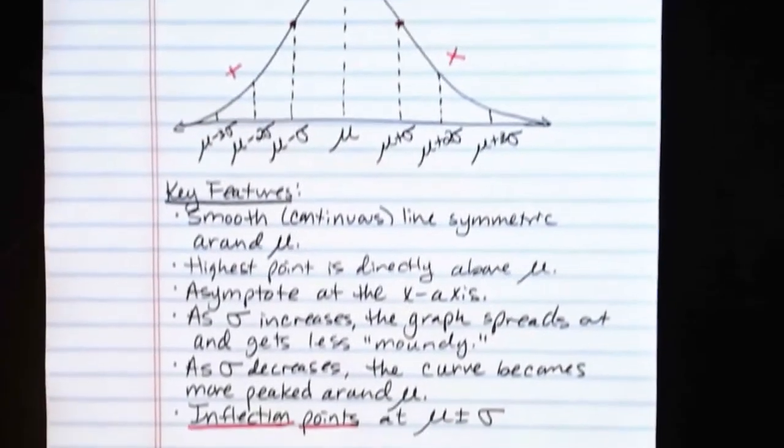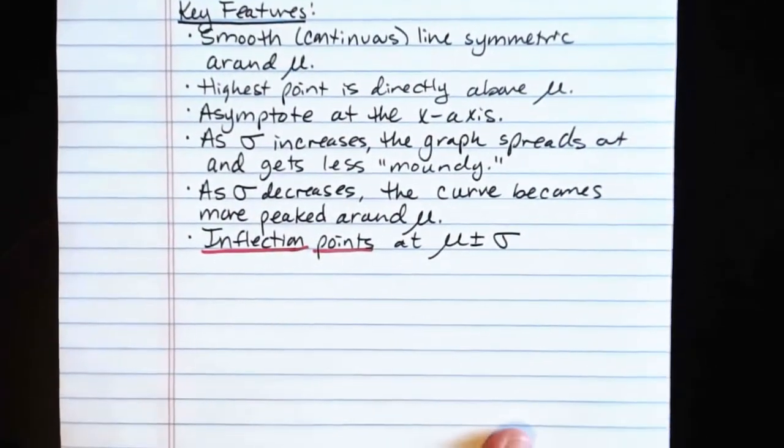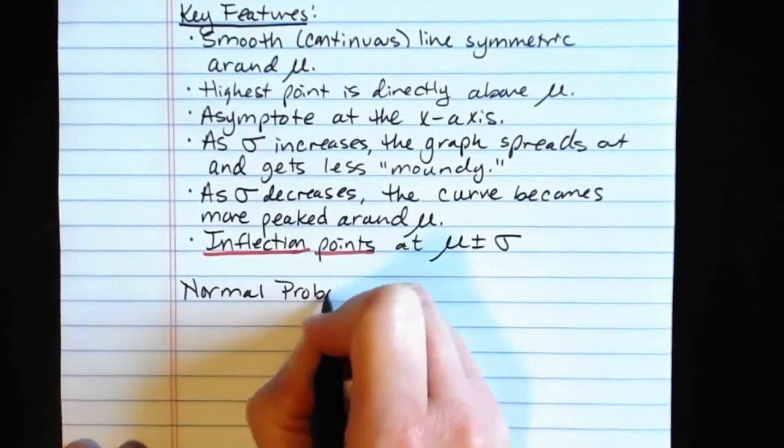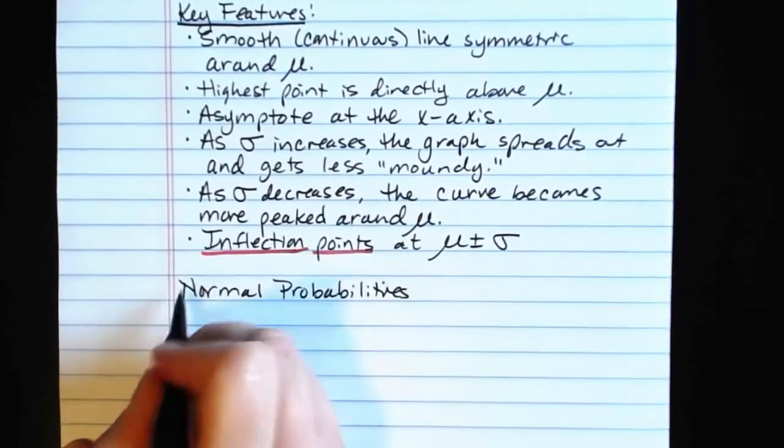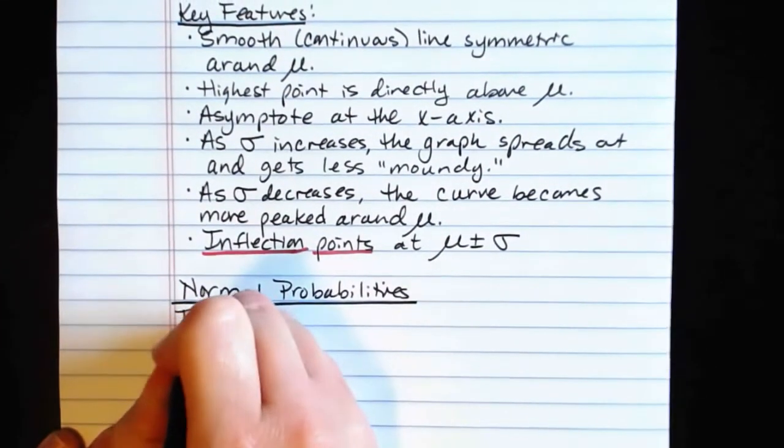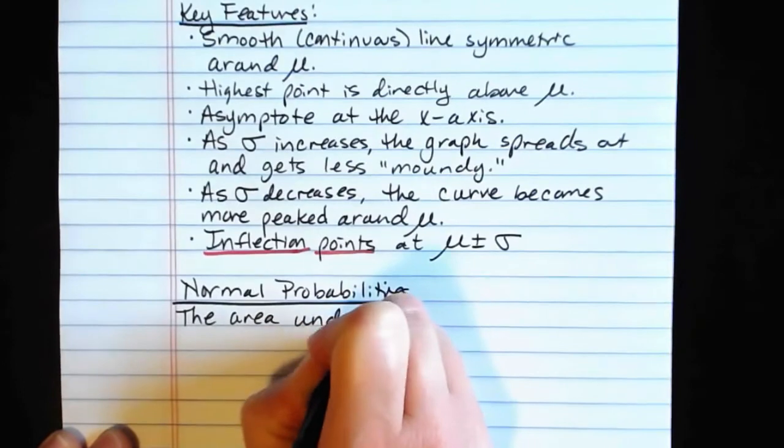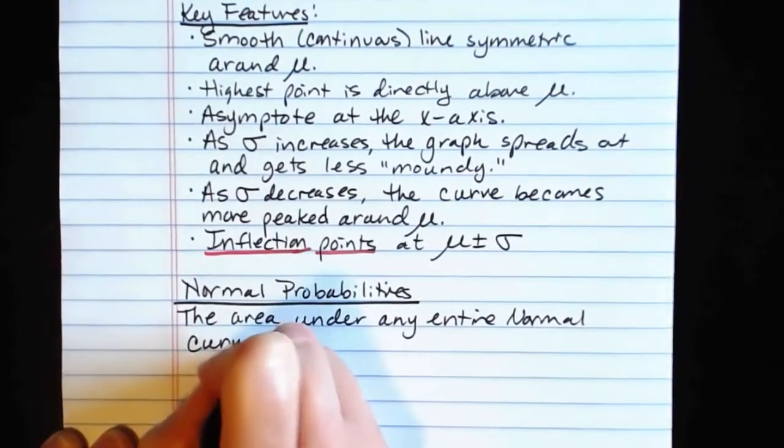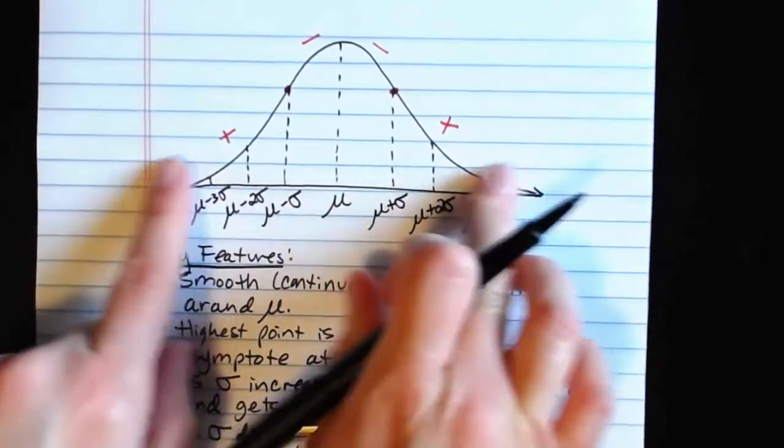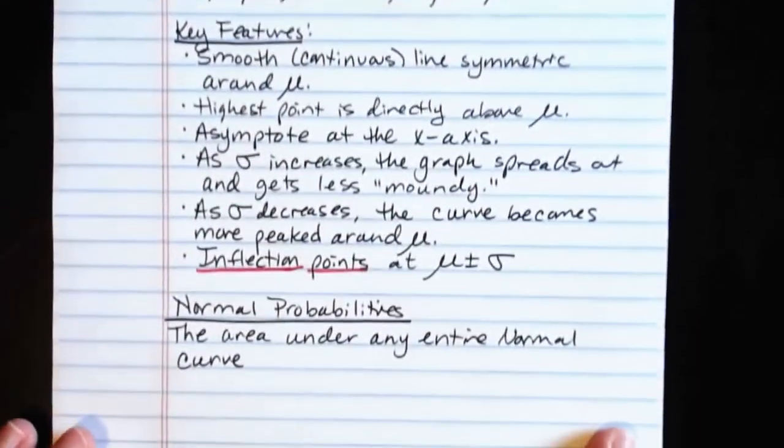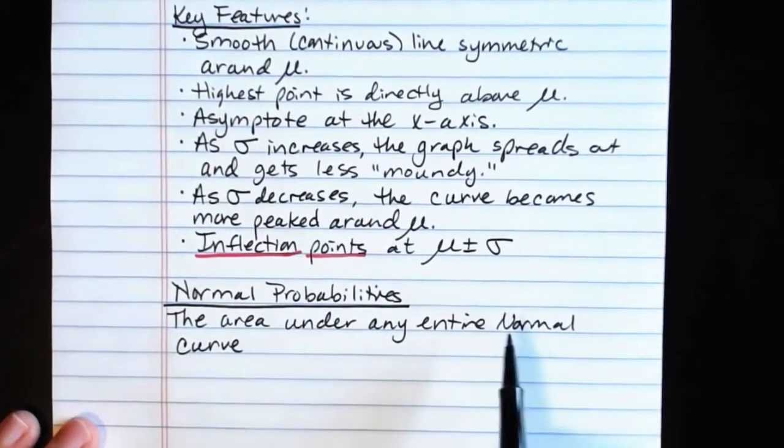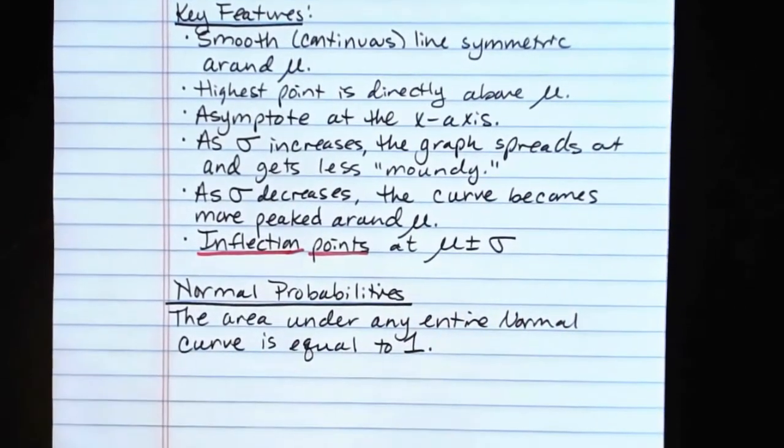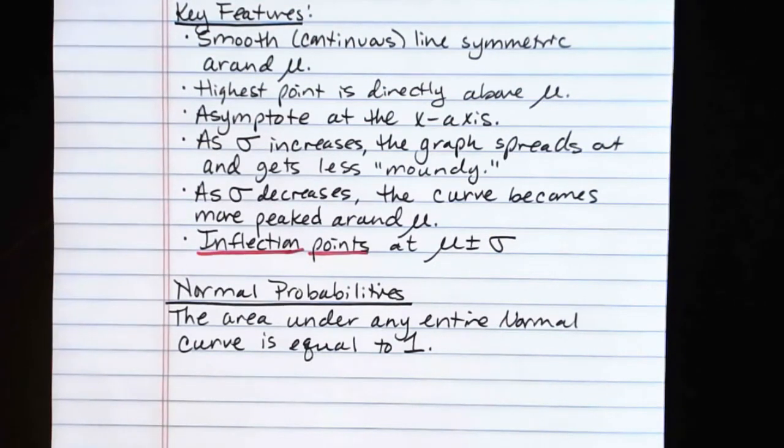So those are some of the key features of the graph. And largely, what we will be doing with the normal curve is we will be using it to calculate normal probabilities. The area under any entire normal curve, so in other words, if you were to go infinitely left and infinitely right, follow this thing out to infinity on both sides, and find the total area under that curve, the area under any entire normal curve is equal to one. Always equal to one. And why is this handy?